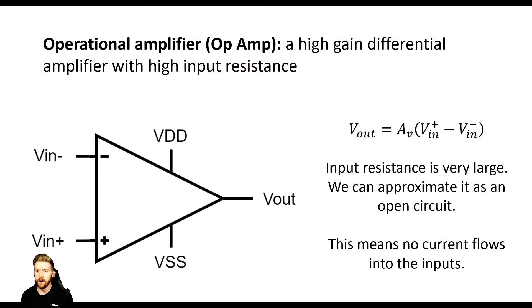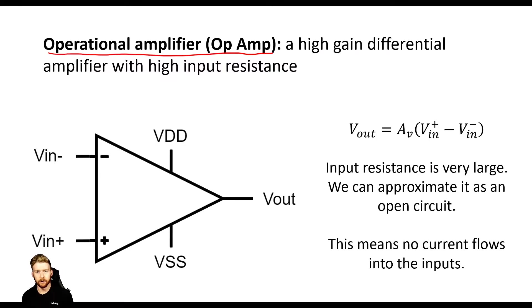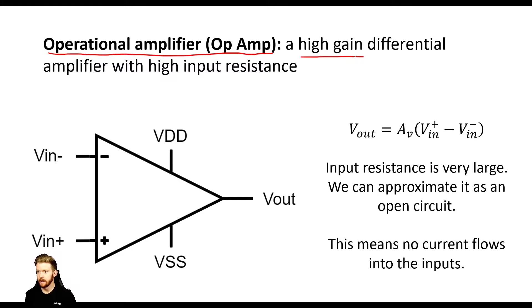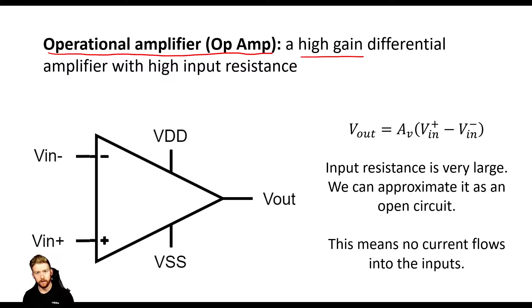We're going to get started with operational amplifiers, or op amps. Op amp is short for operational amplifier. The definition is: a high-gain differential amplifier with high input resistance. This is actually a built-in amplifier made with several different electronics components. It has some very simple analysis, so I wanted to tackle this first. It is built using several different transistors and electronics components, and with all those transistors they're able to make this high-gain differential amplifier.